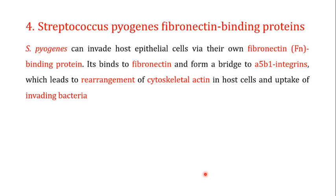Another important virulence component of S. pyogenes is the fibronectin binding protein, also known as streptococcal fibronectin binding protein. S. pyogenes can invade host epithelial cells via fibronectin binding proteins. What these fibronectin binding proteins do is bind to fibronectin, which is an extracellular matrix protein in humans, and form a bridge to a particular class of receptors known as integrins. In this case, the integrin is made up of one alpha subunit and one beta subunit.